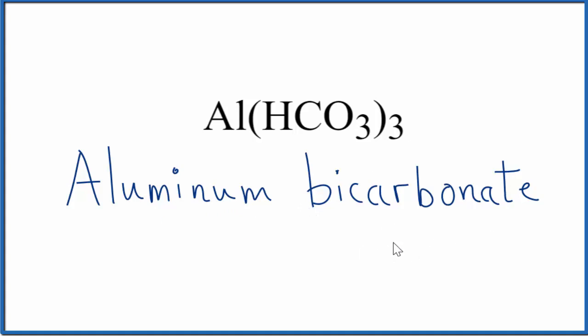If you were given the name and asked to write the formula for aluminum bicarbonate, you need to know that aluminum, that's three plus, and the whole bicarbonate ion, that's one minus. So we need three of these bicarbonate ions here to balance out the three plus on the aluminum, give us a net charge of zero.